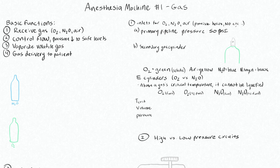You'll see these ports on the wall for any room that's equipped with a gas supply. These ports will have different diameter connections for each of the different gases — that's called the Diameter Index Safety System, or DISS.